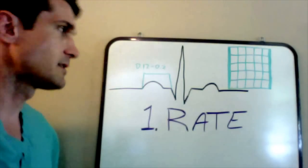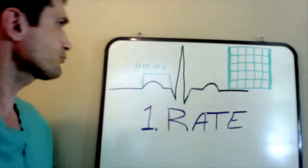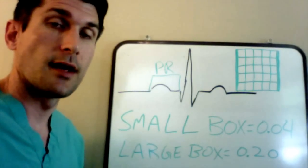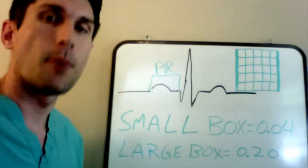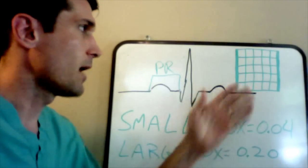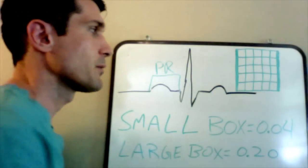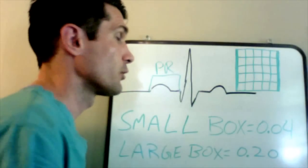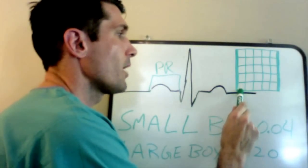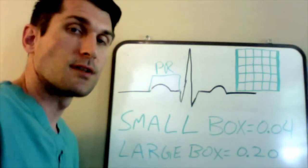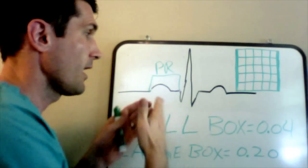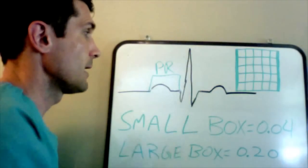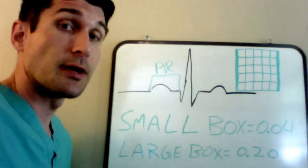Now this gets us into talking about small boxes and large boxes on the grid paper — that's the paper the EKG is printed upon. We have a grid with small boxes contained within one larger box. Each small box is worth 0.04 seconds, which is a measure of time from left to right, and that's going to be superimposed upon the QRS complex so you'll be able to measure it.